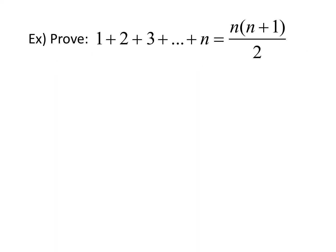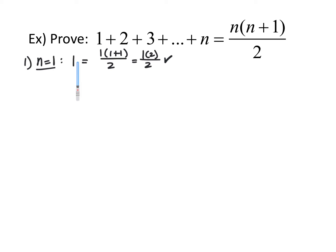For this next proof, we want to prove that 1 plus 2 plus 3 plus so on up to n is equivalent to n times n plus 1 over 2. First, prove it's true for n equals 1. On the left side, plugging in 1 gives 1. On the right side, 1 times 1 plus 1 over 2 equals 2 over 2, which cancels to 1. So we've proved it's true for n equals 1.